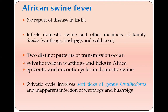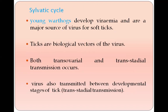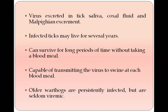The sylvatic cycle involves soft ticks of the genus Ornithodorus and causes inapparent infections in warthogs and bush pigs. Young warthogs are affected and develop viremia, acting as a source of virus for the ticks. Ticks are biological vectors — the virus is transmitted both transovarially and transstadially through different developmental stages. The virus is excreted in tick saliva and other tick excretions, and infected ticks can survive for several years without a blood meal; after each blood meal, the tick is capable of transmitting the virus to another swine.